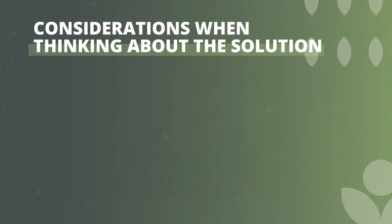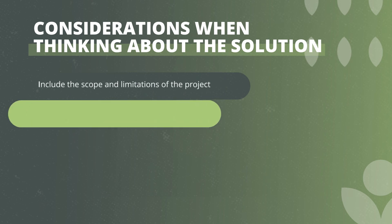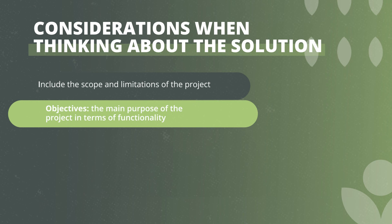When writing down the project solution, the following considerations need to be made. You need to try to include the scope and limitations of the project, the objectives of the project, and the main purpose of the project in terms of functionality — basically what problems will be solved and what services will be provided.